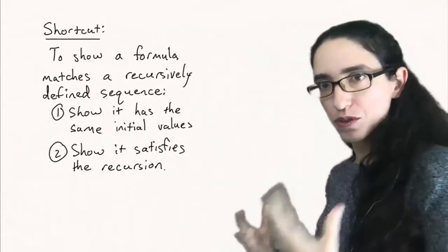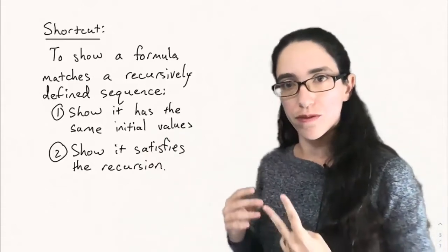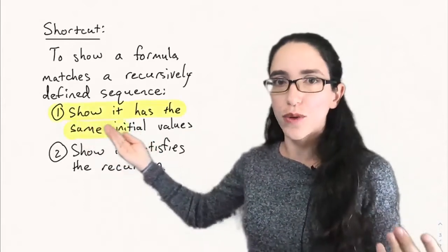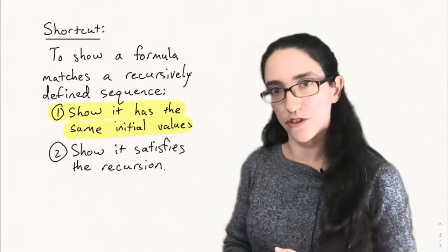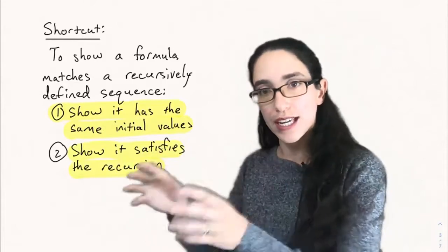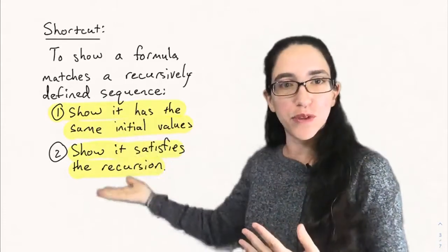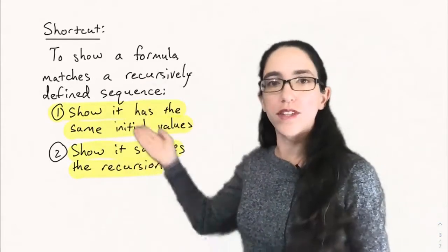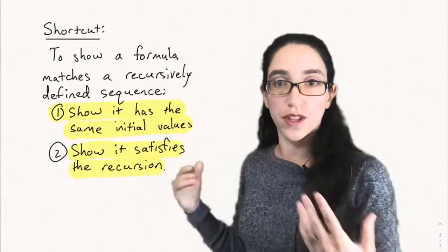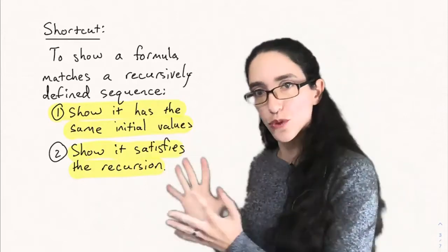So what have we done in all these proofs? The two steps needed to make the induction work are: first, the base case, which boils down to showing the formula has the same initial values as the recursion; and then showing that the formula satisfies the recursive equation — that when you plug it into the recursion, it makes a true statement. So often we just skip writing out the full induction and use this shortcut.